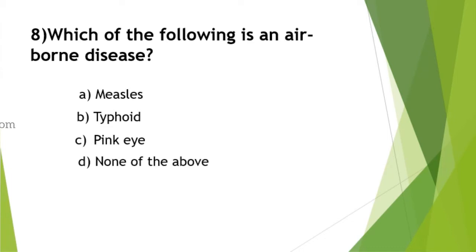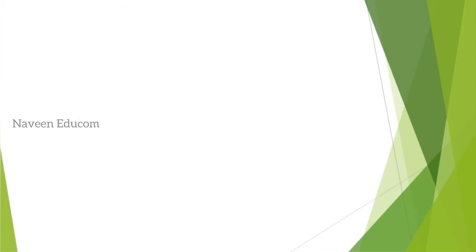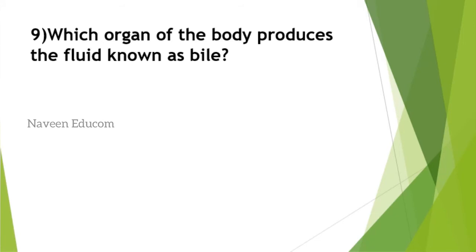Which of the following is an airborne disease? Airborne diseases, waterborne diseases - such examples are very important. They may definitely ask. The answer is measles. Airborne diseases are infectious diseases spread by airborne transmissions including chickenpox, anthrax, influenza, measles, smallpox, cryptococcus, and tuberculosis. Which organ of the body produces the fluid known as bile? It's a very easy question from biology. The answer is bile is produced by our liver.